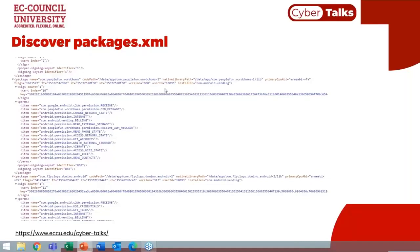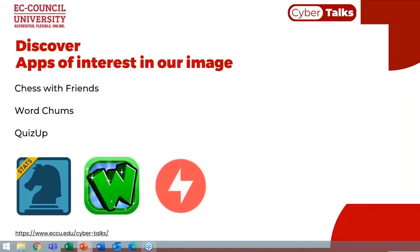On different operating systems, this will be in a different location — on iOS you'll look at the TCCDB, and on Chromebook the extension preferences file. On this particular image, we found three apps of interest that appear to have communications even though none of our forensics tools parsed them: Chess with Friends, WordChums, and QuizUp.